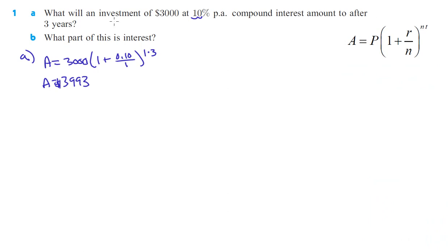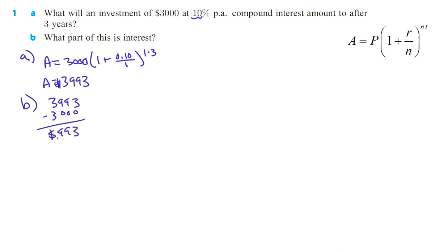So that's how much you end up with. They said what's it going to amount to after three years, which we figured out. And then part B says, what part of this is interest? So we take what we ended up with, $3,993, and subtract our original investment of $3,000, and we get $993 is our interest.